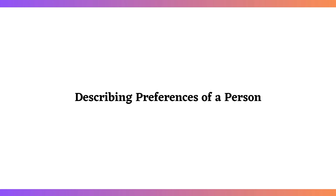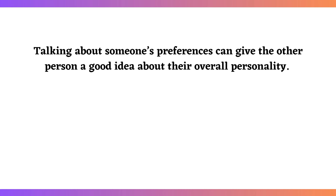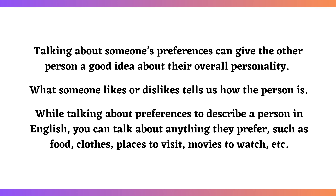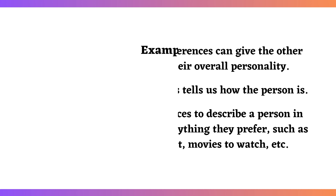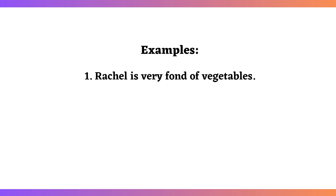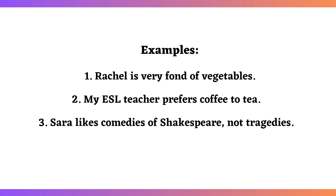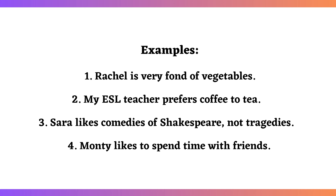Describing preferences of a person: talking about someone's preferences can give the other person a good idea about their overall personality. What someone likes or dislikes tells us how the person is. While talking about preferences, you can talk about anything they prefer, such as food, clothes, places to visit, movies to watch, etc. Examples: Rachel is very fond of vegetables. My ESL teacher prefers coffee to tea. Sarah likes comedies of Shakespeare, not tragedies. Monty likes to spend time with friends.